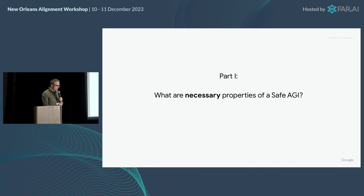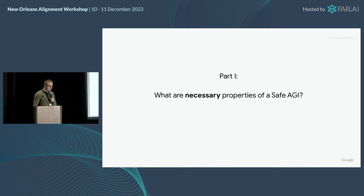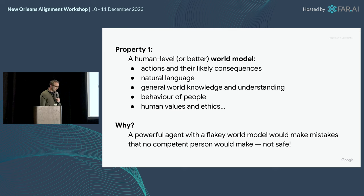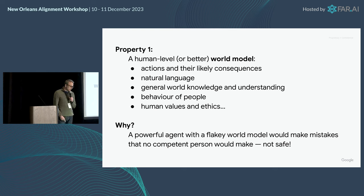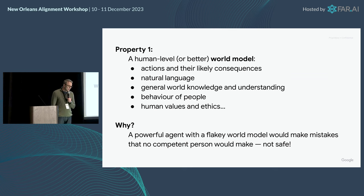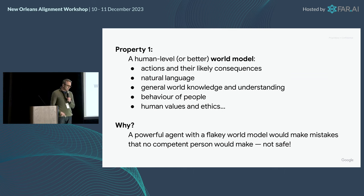I'm going to think about this a bit like a mathematician. What are the necessary properties for one of these systems as I've defined it? They're actually quite simple. Property one: a human-level or better world model. This means actions and their likely consequences, understanding natural language, general world knowledge, understanding people, understanding human values and ethics — not just the ones we want to follow, but in general. If a powerful agent has a flaky world model, it's going to make mistakes that no competent person would make. That's not safe.